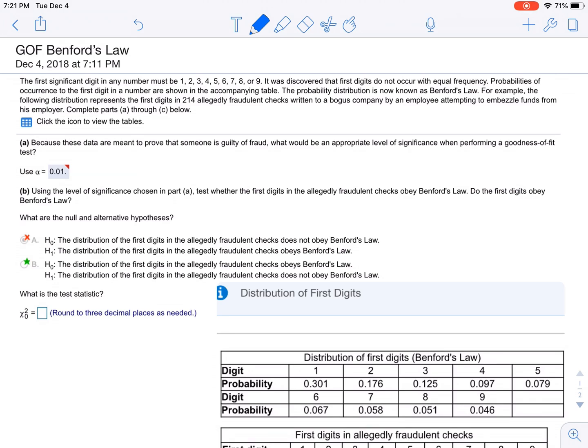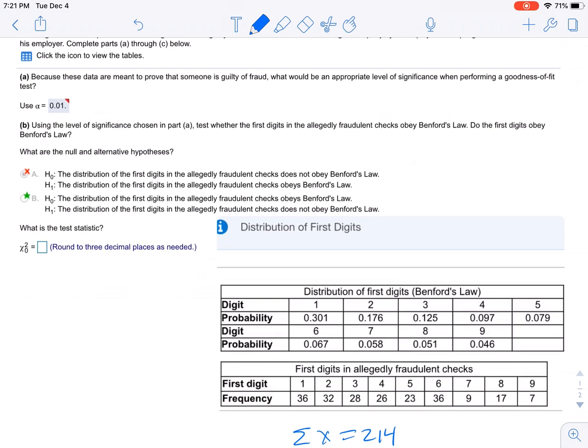All right, so how do we do the test? Well, they give us this data here. So the bottom table is our observed values. There were 36 checks where the first digit was a 1, 32 checks where the first digit was a 2, and so forth.